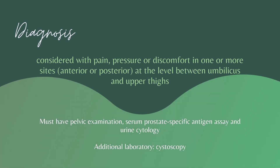ICBPS is diagnosed based on its symptoms — pain, pressure, or discomfort, anterior or posterior, at the level between the umbilicus and upper thighs. It must exclude other possible causes with pelvic examination in women, serum prostate-specific antigen assay in men, and urinary cytology. Cystoscopy is another test used in detecting the Hunner lesion, but it is not routinely done.